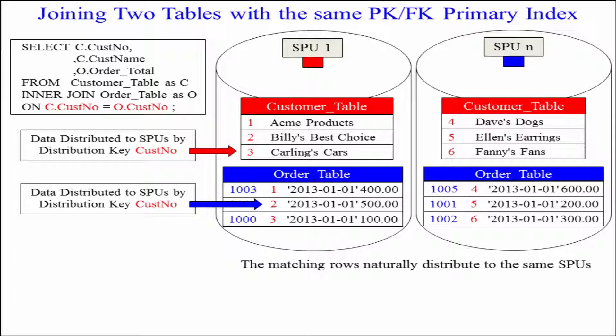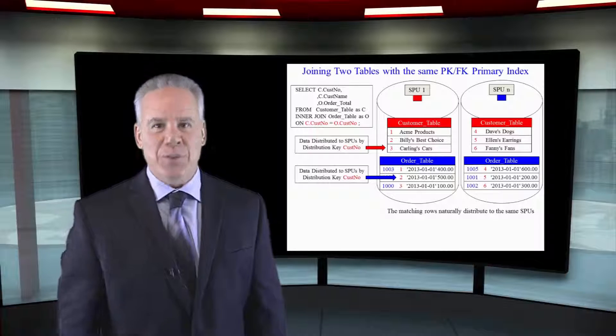Hey, on SPU 1, there's 1, 2, 3. On SPU 2, there's 4, 5, 6. It's all in line and perfectly ready to be joined.